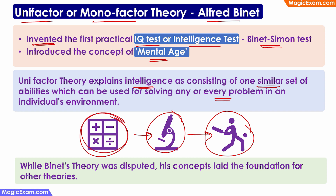Therefore, if intelligence was just one typical set of abilities, then a person should be equally good in all of these, which does not happen in real life. Therefore, scientists have said that intelligence consists of various types of abilities and it cannot be just one set of abilities. While Binet's theory itself was disputed, his concepts and ideas did lay the foundation for many of the theories that followed.